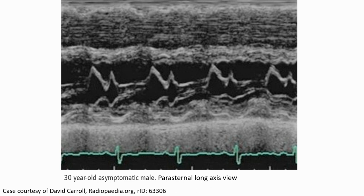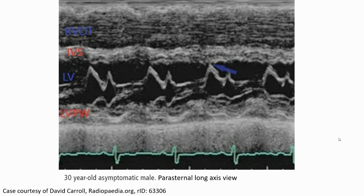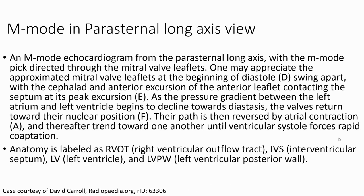Here is the parasternal long-axis view of an echocardiogram. This demonstrates the relevant structures and landmarks we are looking for. Shown here is the M-mode in the parasternal long-axis view, with the M-mode cursor directed through the mitral valve leaflets.